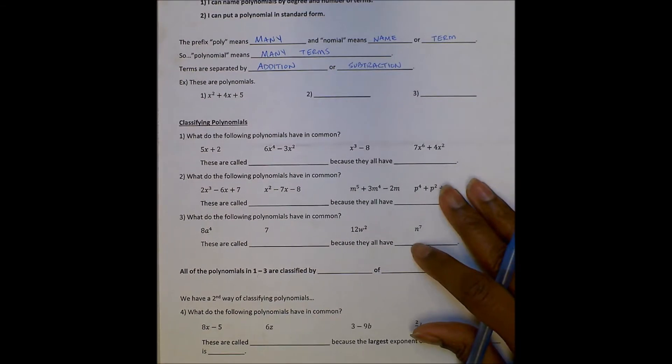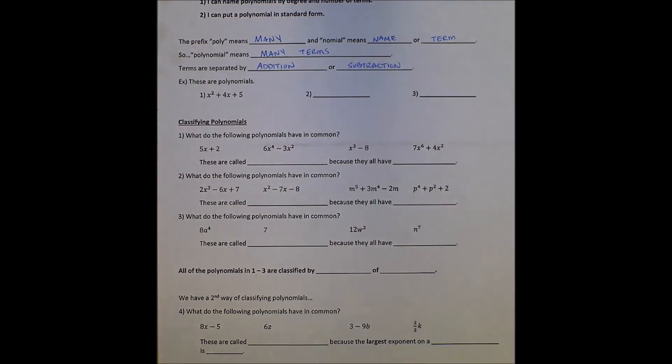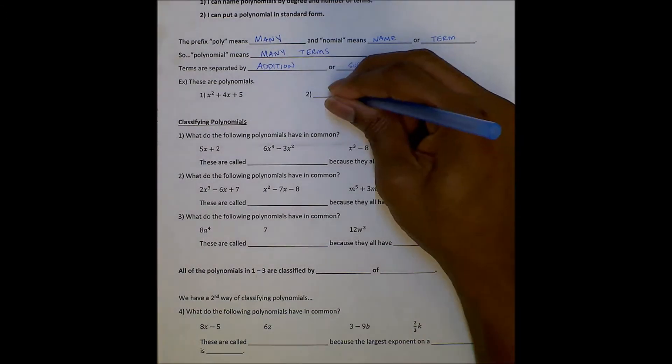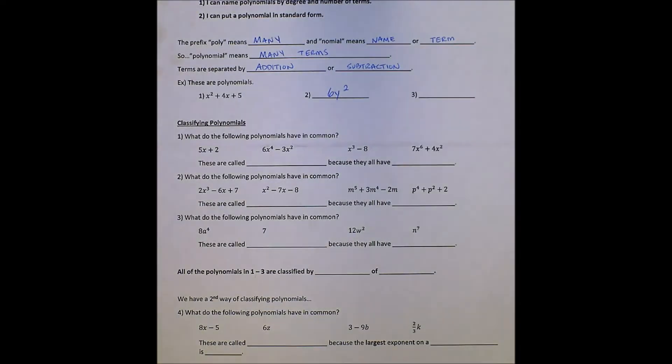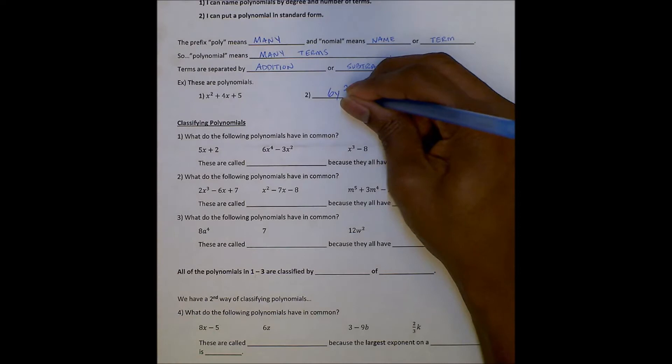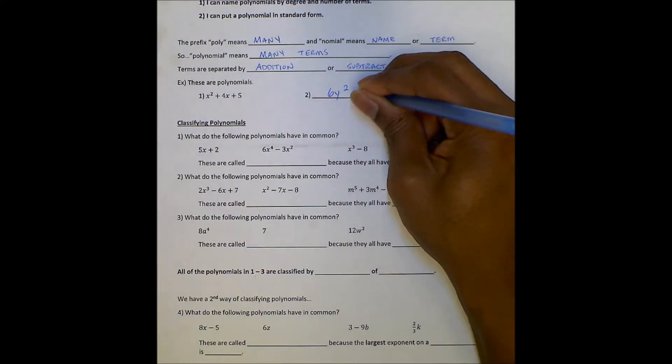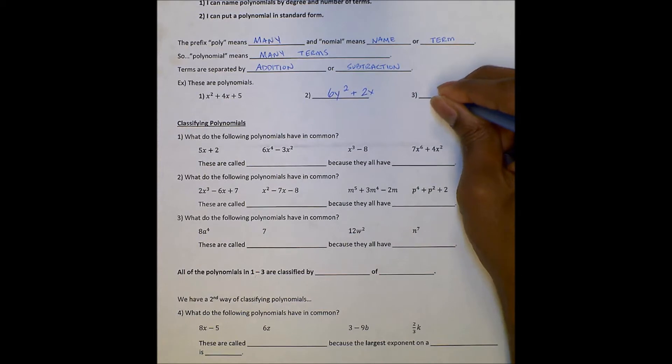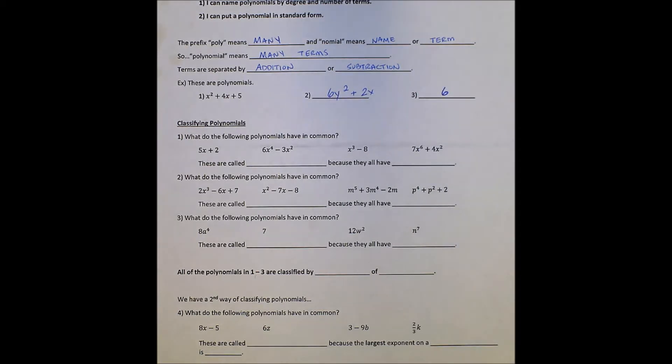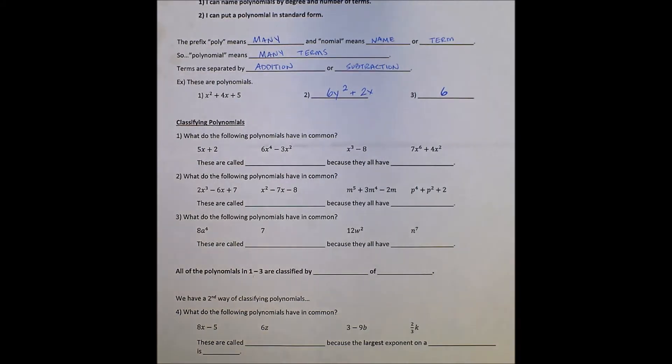Here's some polynomials. We have x squared plus 4x plus 5 - that's a polynomial. We have 6y squared, that's a polynomial. We can even add something to it, like 2x plus 2x - that's a polynomial. Even just the number 6 is a polynomial. Any time we have any terms, that is a type of polynomial. Now we're going to get into classifying these polynomials.